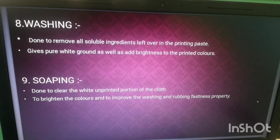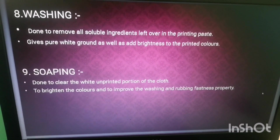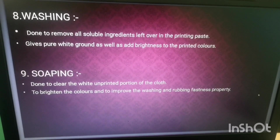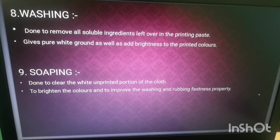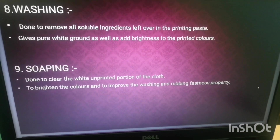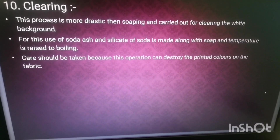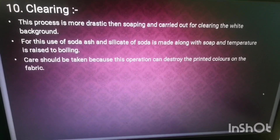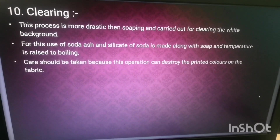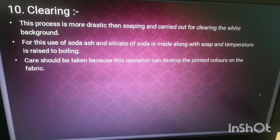Soaping: done to clear the white unprinted portion of the cloth, to brighten the color, and to improve the washing and rubbing fastness properties. Clearing: this process is more drastic than soaping and is carried out for clearing the white background. Soda ash and silicate of soda are used along with soap, and the temperature is raised to boiling. Care should be taken because the operation can destroy the printed color on the fabric.